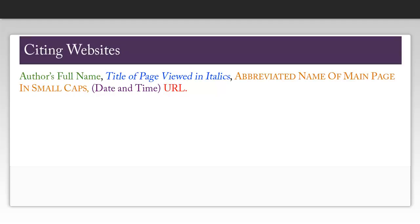You also should look for the date and time of publication. If this is not available, you should put the last updated date, the copyright date, or the visit date after the URL rather than before. After the date and time of publication, you will put the URL.